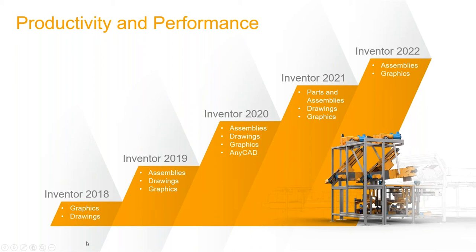You can see there's a chart going back to Inventor 2018 — they spent most of their time improving the graphics and drawing environment. 2019: assemblies, drawings, graphics. You can see most of these different iterations improved on assemblies and graphics with each version. And then the AnyCAD technology added in 2020 was a pretty cool addition — you can bring in non-native files, keep their same native file extension, and use them in your Inventor designs.